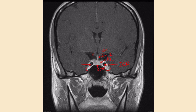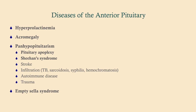We're going to talk about a few diseases of the anterior pituitary: hyperprolactinemia and its various causes, acromegaly, various disorders causing panhypopituitarism — which results in reduced amounts of all anterior pituitary hormones — and finally empty sella syndrome, where that anatomy will come back into play.